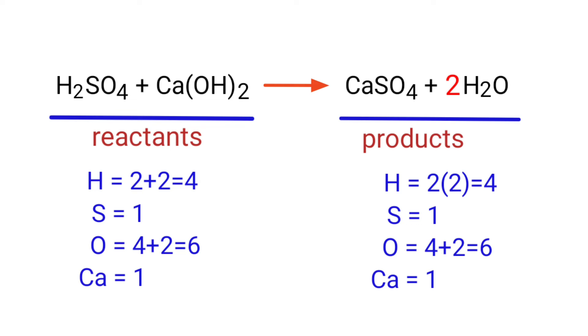The equation is now balanced. There are 4 hydrogen atoms, 1 sulfur atom, 6 oxygen atoms and 1 calcium atom on both sides.